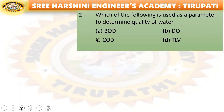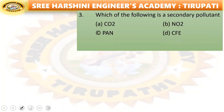Second question: which of the following is used as a parameter to determine the quality of water? The answer is dissolved oxygen. Option B is the right answer.